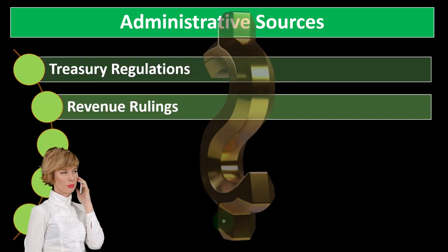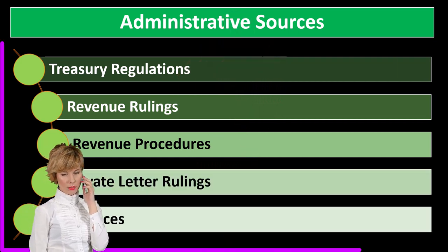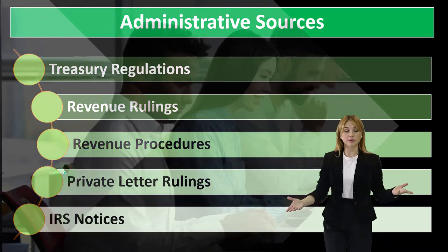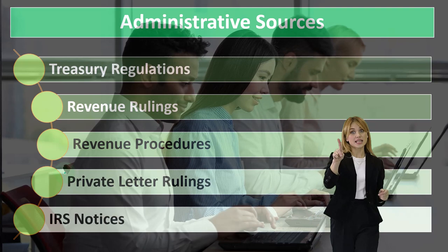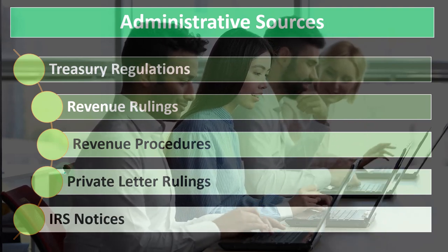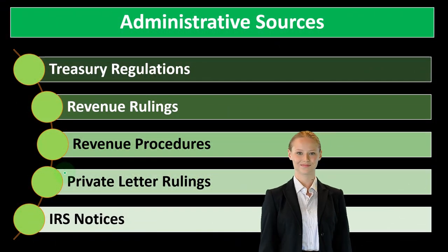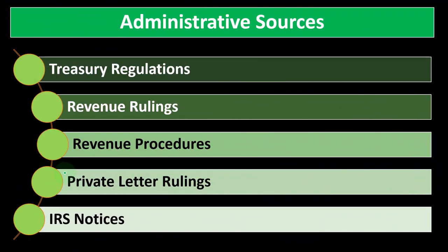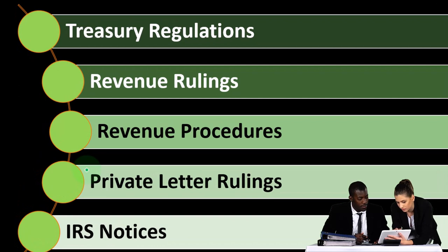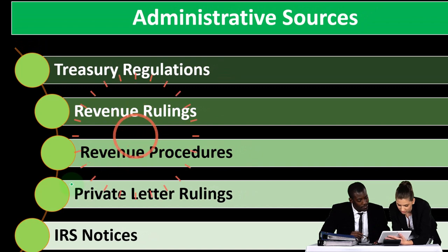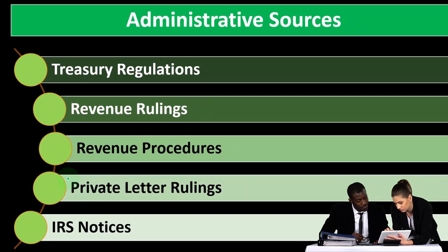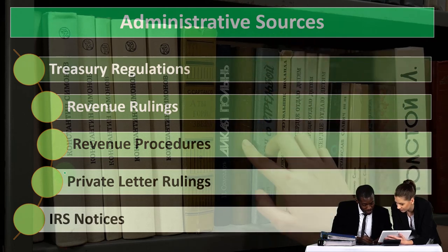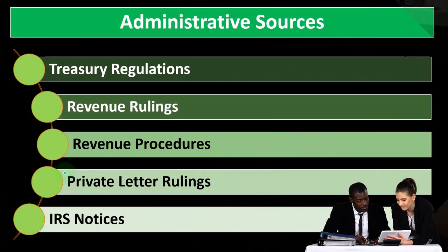Administrative sources include the treasury regulations, revenue rulings, revenue procedures, private letter rulings, and IRS notices. These are types of things that if something's not explicit in the law and people have questions on it, the IRS is going to try to fill in the gap and build a case for their position over time. Their position isn't as strong as the law itself, so you can still possibly argue with it, but the longer they build a case in their position, the more power they have behind it. The instructions to the Form 1040 might point you to publications that give further detail on those items.